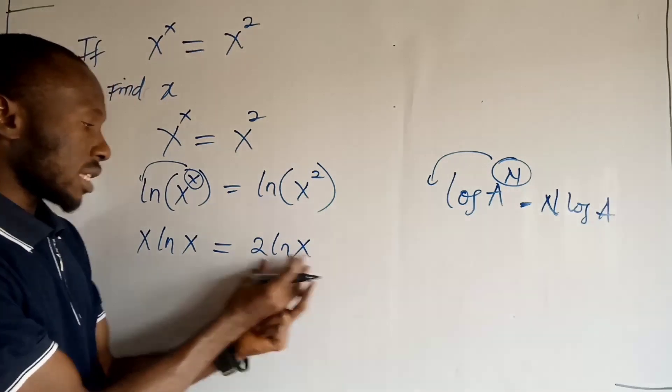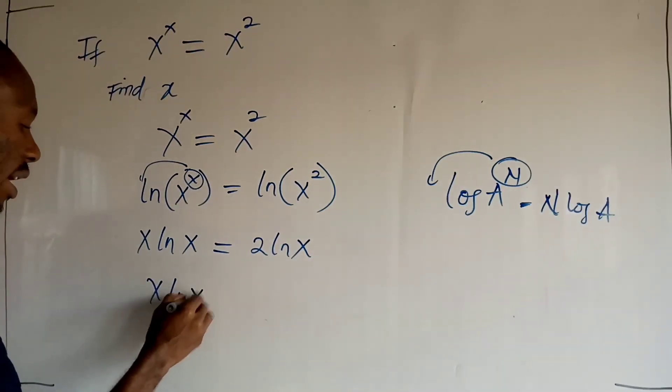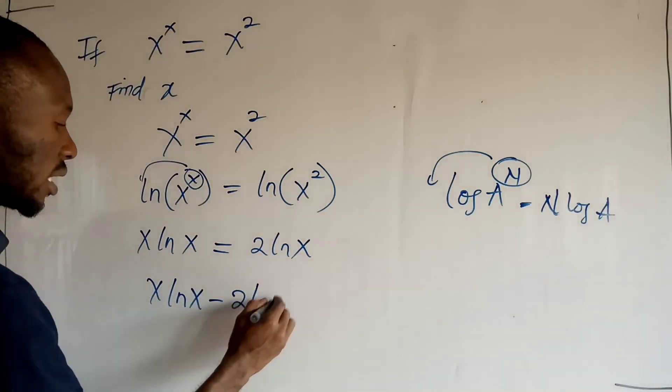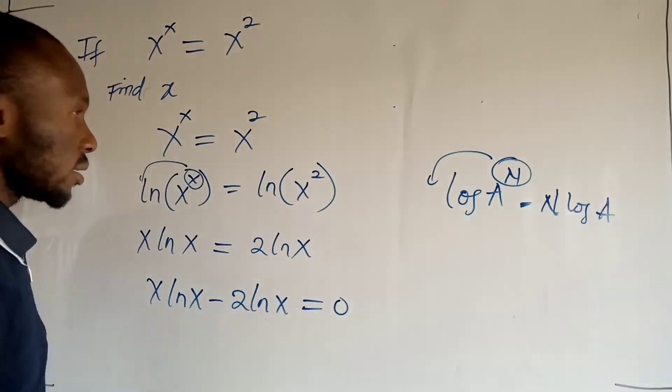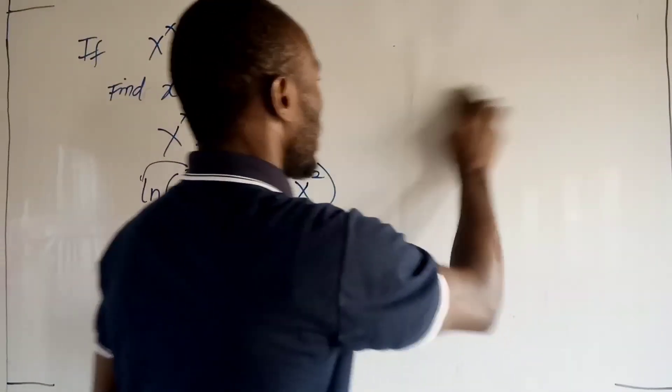Okay, now you want to bring all these to this side of the equation. So you have x ln x minus 2 ln x equal to 0. Now let us take off these from here.